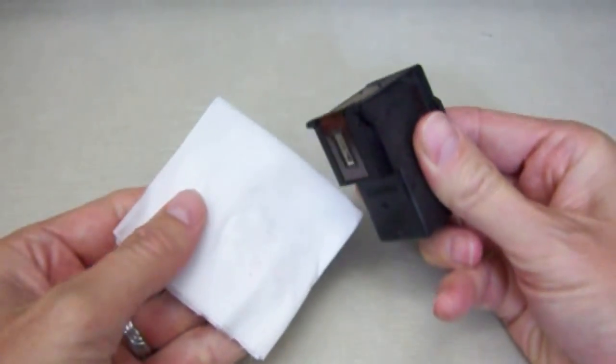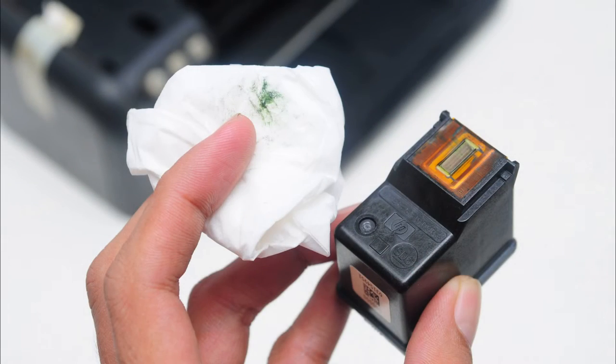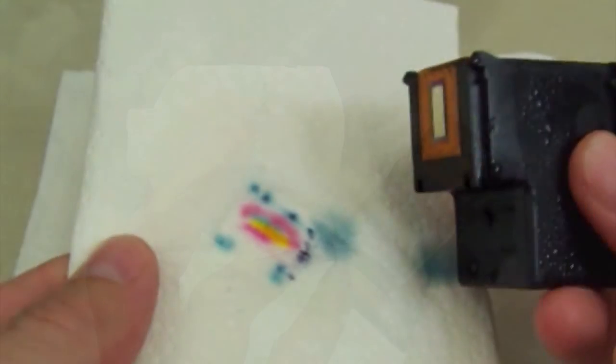Blot the printhead nozzle plate which is located on the underside of the cartridge. For the color cartridge, all three colors should be visible on the damp towelette.